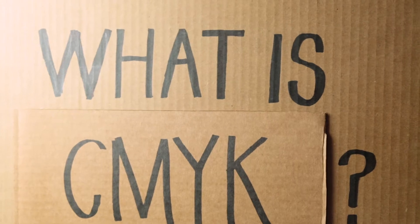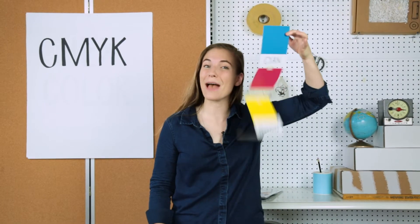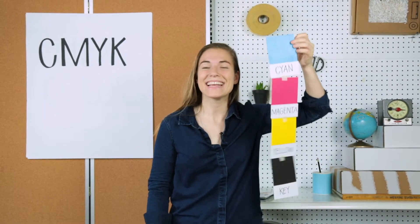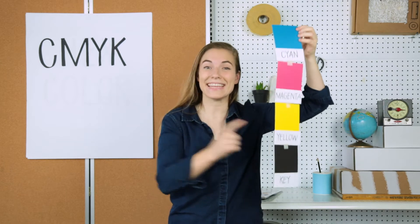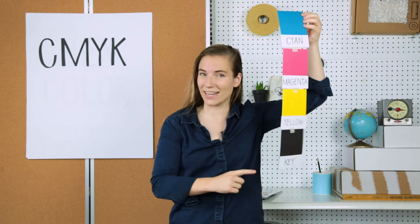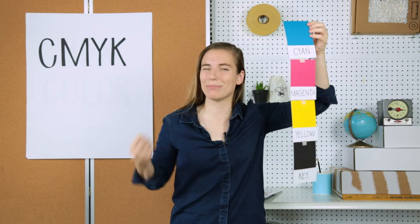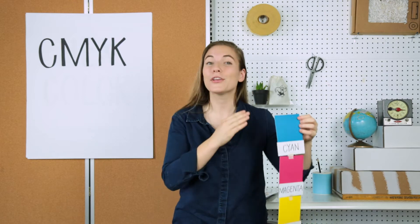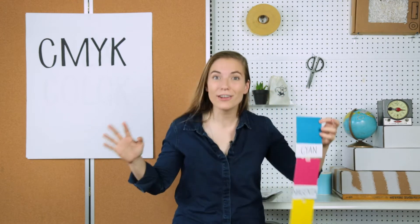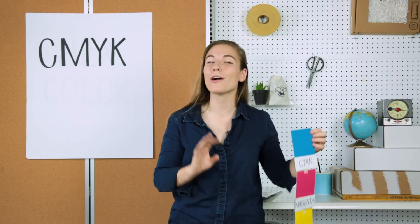What is CMYK? CMYK stands for cyan, magenta, yellow, and key, which also means black. These are the four ink colors that are used to make all colors in four-color process printing.